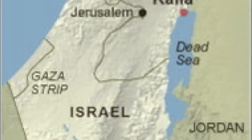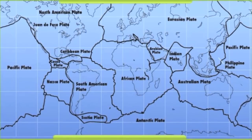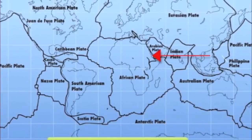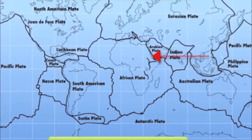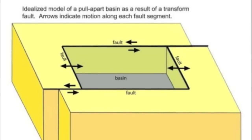Before discussing the scientific implications of the makeup of the Dead Sea, it is important to understand its geographic and geologic locations. The Dead Sea is located in Israel and Jordan along the boundary of the African and Arabian tectonic plates in the Dead Sea Basin. The rifting that formed the Dead Sea Basin is estimated to have begun about 18 million years ago in the Miocene, on a special type of transform boundary possessing strike-slip faulting that looks like this.